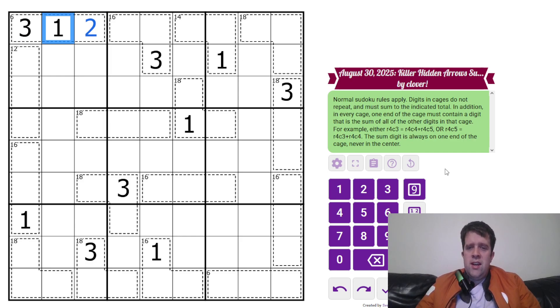In addition, in every cage, one end of the cage must contain a digit that is the sum of all the other digits in the cage. We know that here, three equals one plus two. But here, we're probably going to need this digit. Unless three is going to be the sum of one and two, somehow making 16, we might need that arrow to go that way instead. The sum digit is always on one end of the cage, never in the center. That's all you need to know to solve today's puzzle.